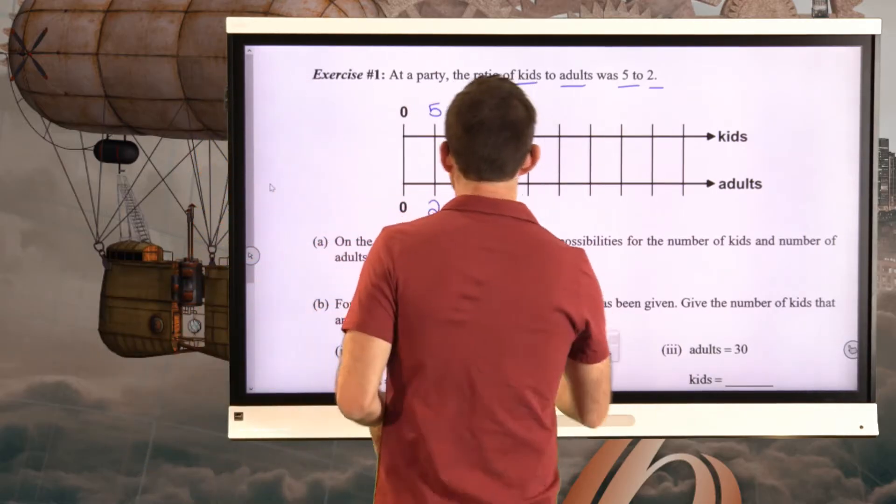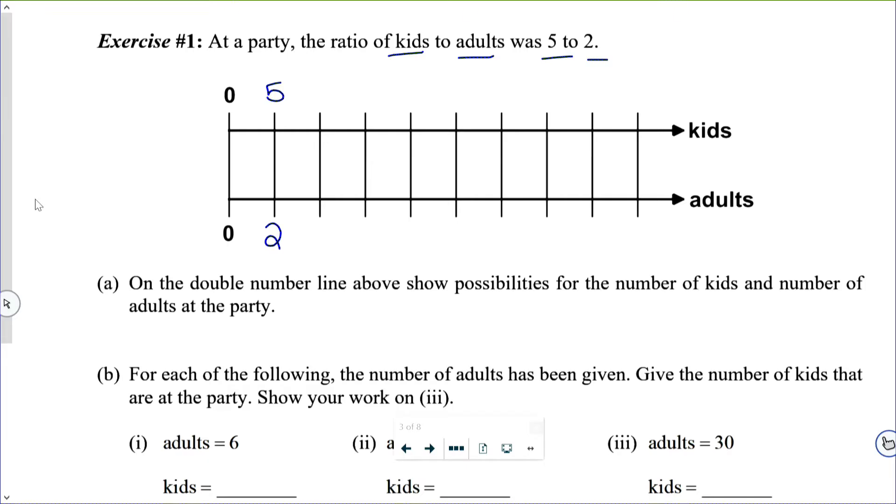Forget about the adults just for a moment. The kid number line is going to be 10, 15, 20, 25, 30, 35, 40, 45.